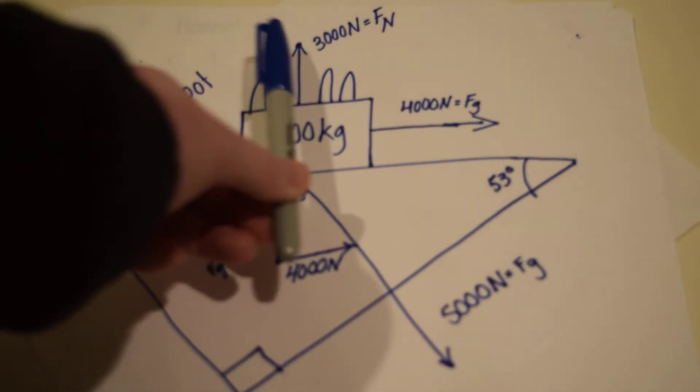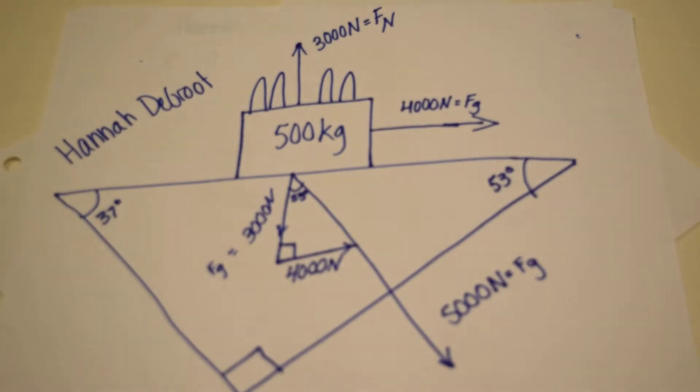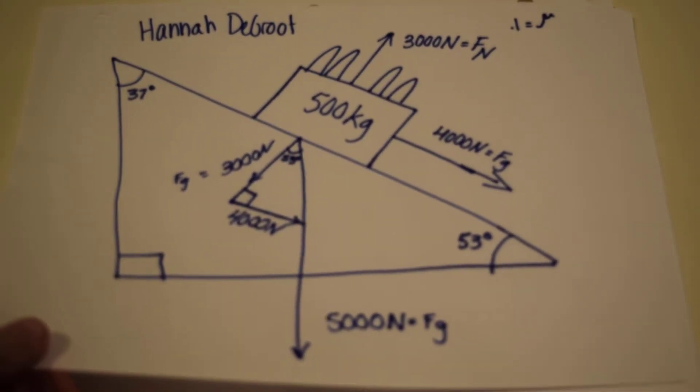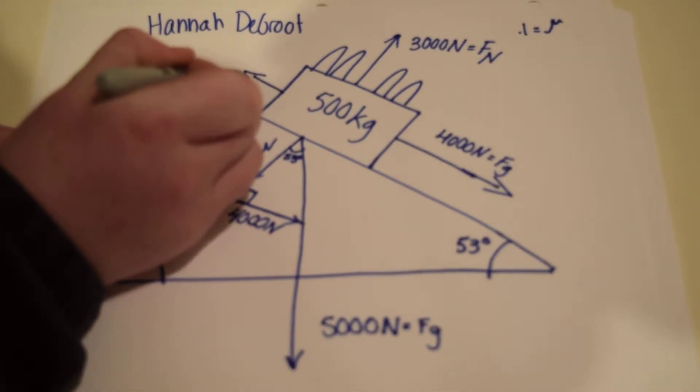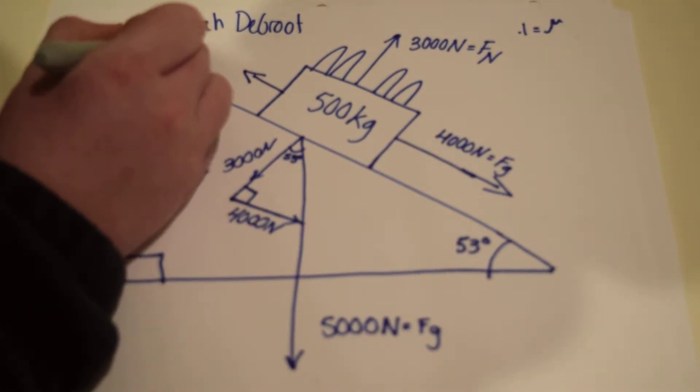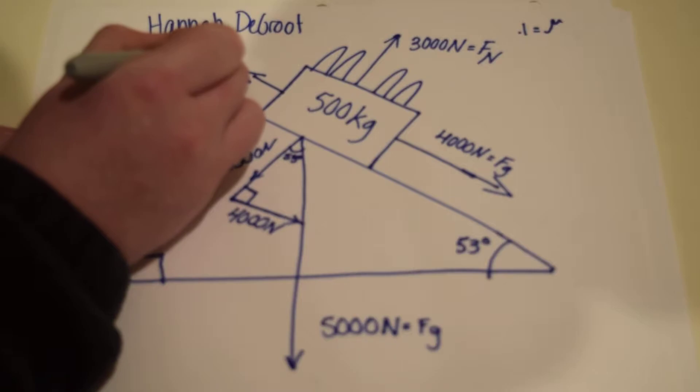So now you can see that this is the horizontal and then this would be the vertical. So now we know here that the friction force is 300 newtons.